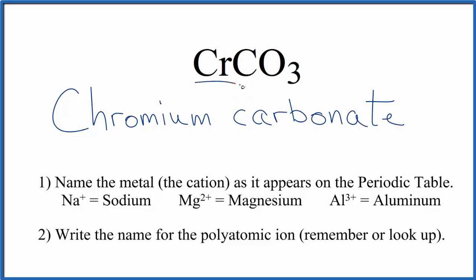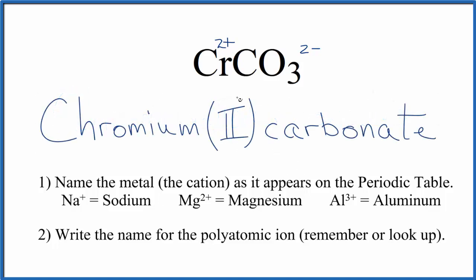But because chromium is a transition metal, we have to put the charge in the name. We know that the carbonate ion, the whole thing, is two minus. So the chromium is going to have to be two plus. So we're going to put a Roman numeral two with parentheses between the names. So the name for CrCO3 is chromium two carbonate.